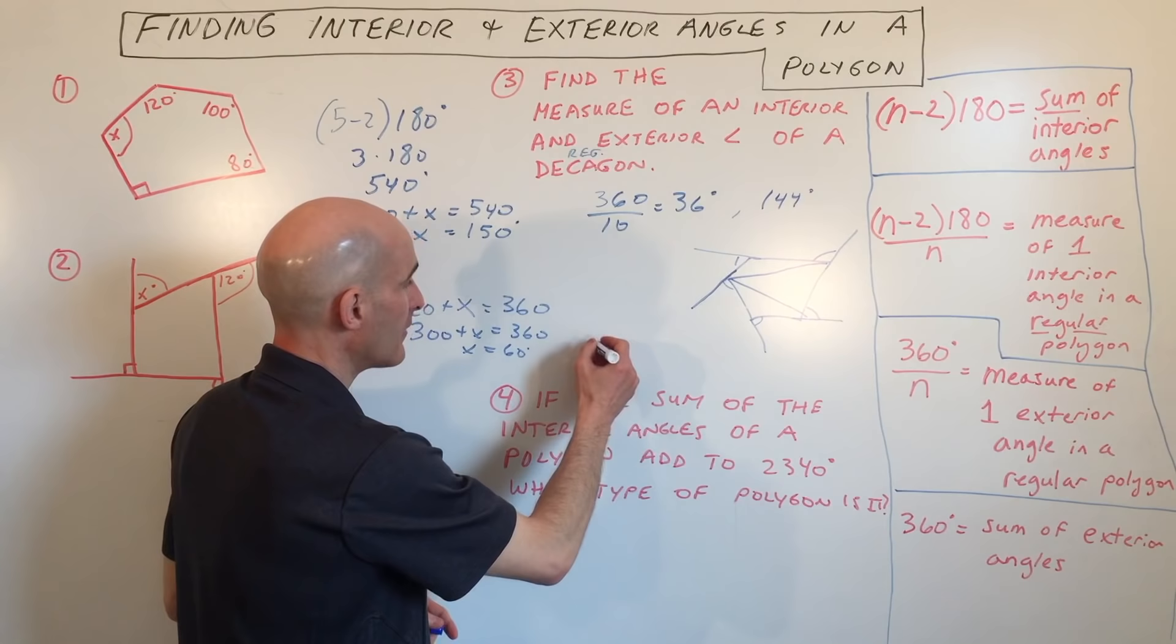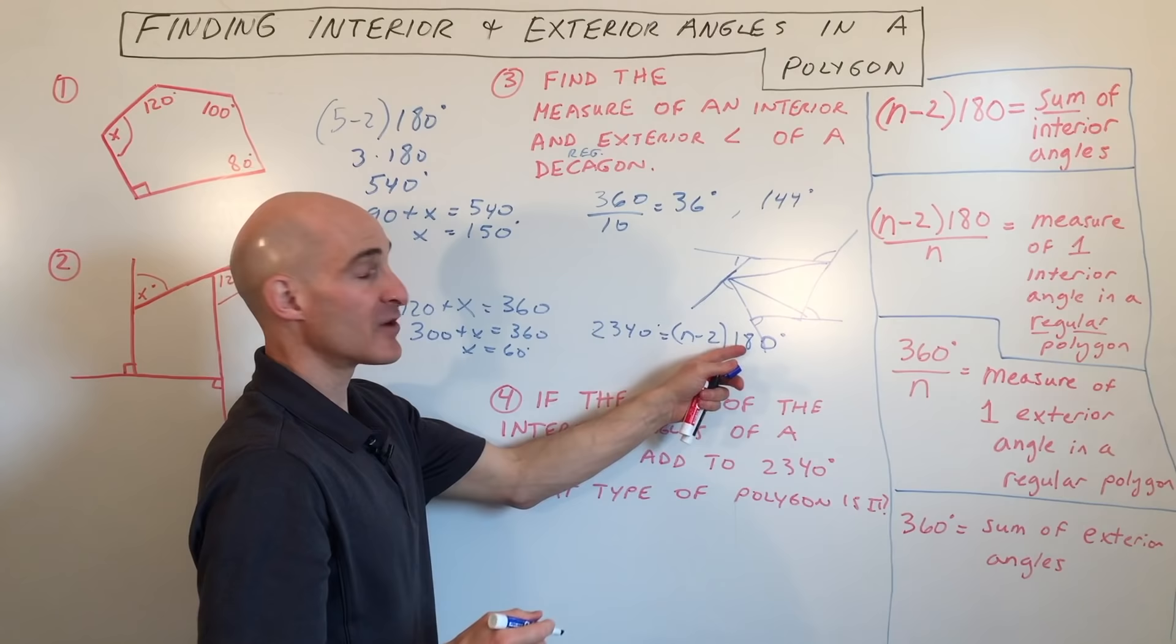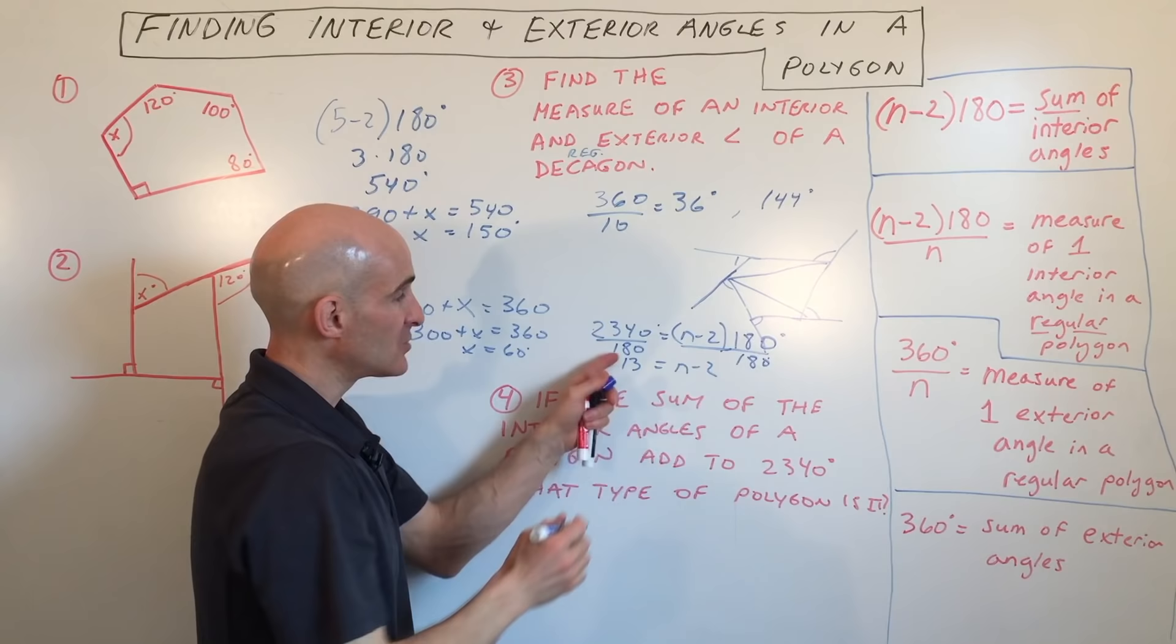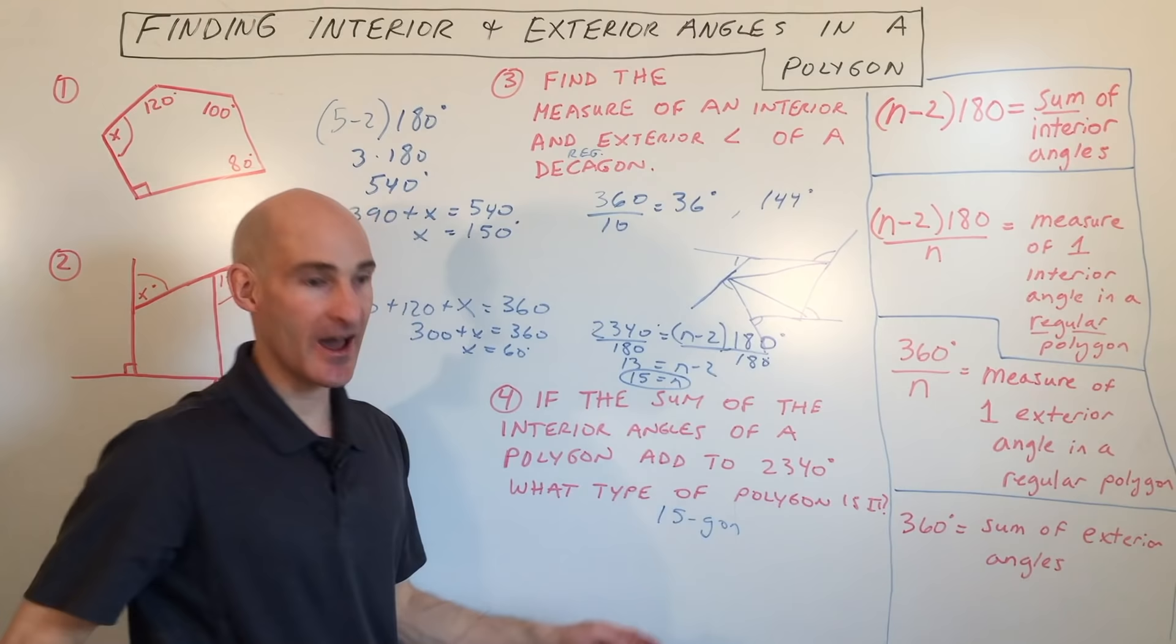So we have 2340 equals n minus 2 times 180. I'm going to divide both sides by 180. This comes out to 13. And then if I add 2 to both sides, I get 15 equals n. So this is a 15-gon. So when it starts to get up in those higher numbers, you can just put 15 dash gone, 15 sides or 15 angles dash gone.